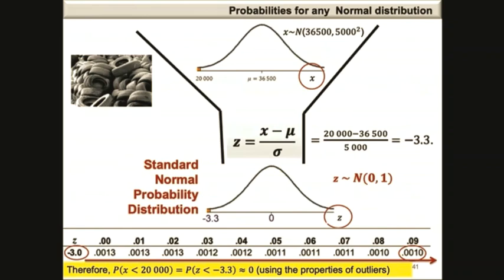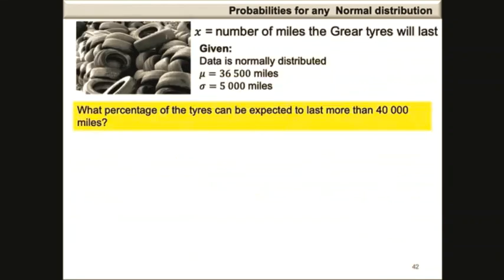Therefore, the probability that x is less than 20,000 is equal to the probability that z is less than minus 3.3, and this is approximately 0.001.